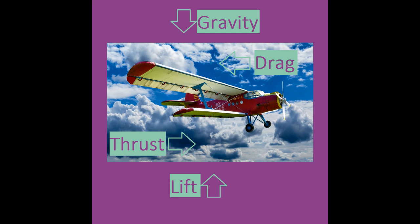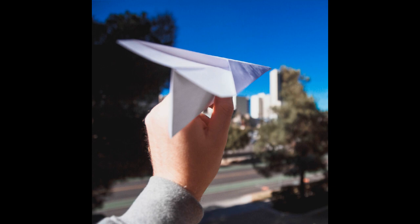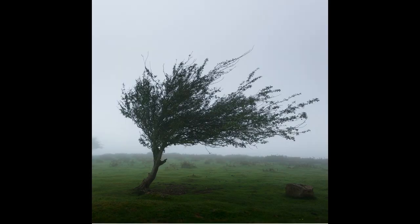The planes we're going to make today work because of all of these forces, but because they don't have a way to generate constant thrust, they do eventually fall to the ground. The thrust we are able to provide the plane is created by our arm when we throw the plane. The flight of an airplane is also always affected by outside forces such as wind and changes in air pressure. Our paper planes are no different.